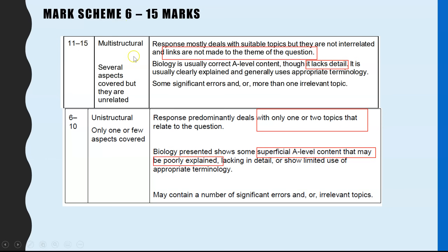Eleven to fifteen is the box that most students score in. For the last couple of years the average mark was around 13 out of 25 across the whole UK. The multistructural box is where the response mostly deals with suitable topics relevant to the title, but links are not made to the theme of the question.